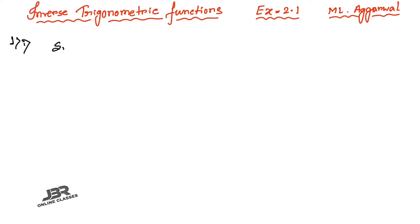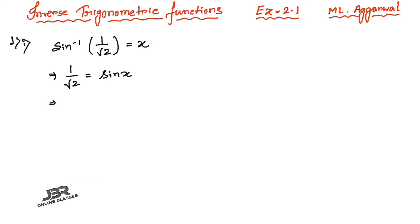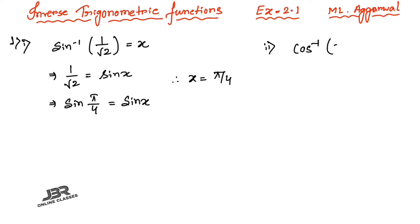Problem 1: sin⁻¹(1/√2). We let sin⁻¹(1/√2) = x, so 1/√2 = sin x. Since 1/√2 = sin(π/4), comparing both sides, x = π/4.